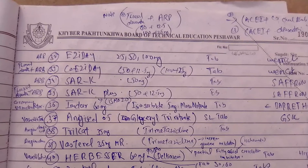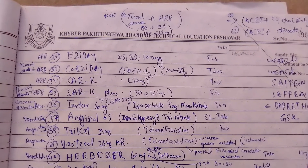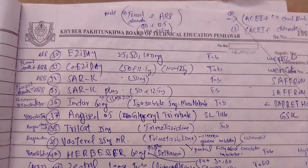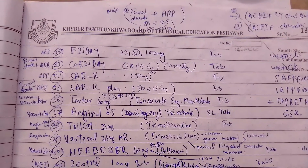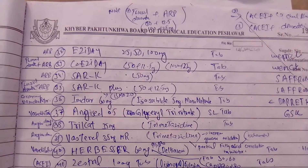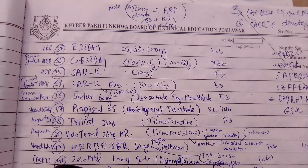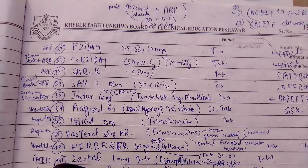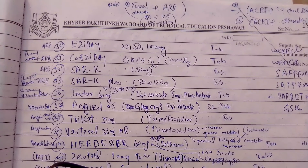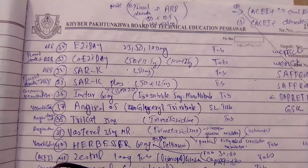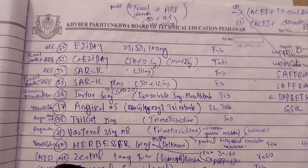Sar K contains losartan potassium 50 mg tablets. Sar K Plus is a combination tablet containing losartan potassium 50 mg and hydrochlorothiazide 12.5 mg. Losartan potassium is an angiotensin receptor blocker while hydrochlorothiazide is a thiazide diuretic.